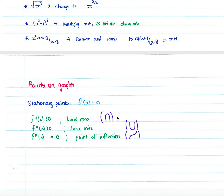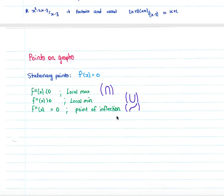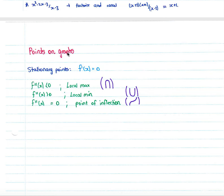When looking at points on a graph with derivatives, you will often be asked to find the stationary points. You do this by finding the derivative of the function and then making your derivative equal to zero, which gives you the x-coordinates where the stationary points lie. Stationary points are simply where f'(x) equals zero.